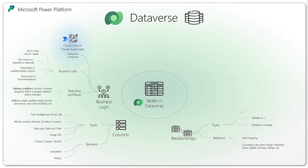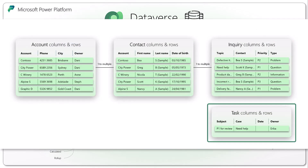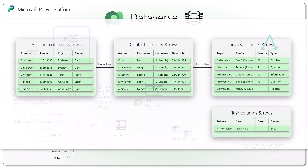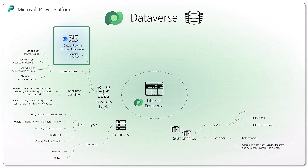You can define business logic. You have real-time workflows that are executed on creation or on update synchronously, so there is no gap between the trigger and the action being executed. When a record is created, assigned, or a field is changed, you can execute additional actions, populate another field, or create another record somewhere else. You can also define business rules like setting column values or setting fields that are optional or required. And you can, of course, call the Dataverse connector in Cloud Flow, where you can leverage Power Automate to run additional logic.